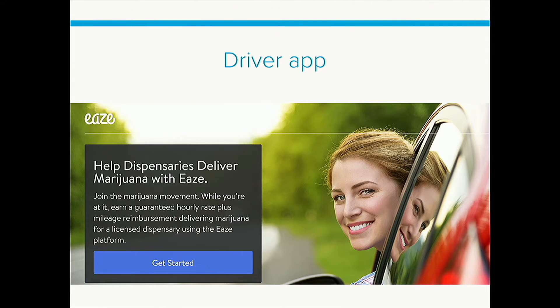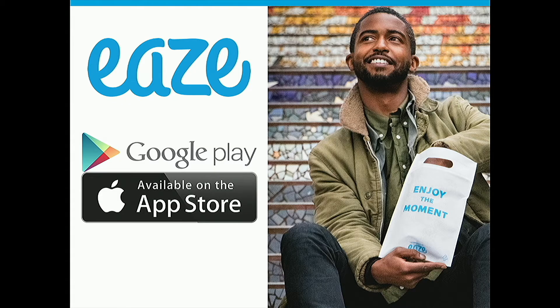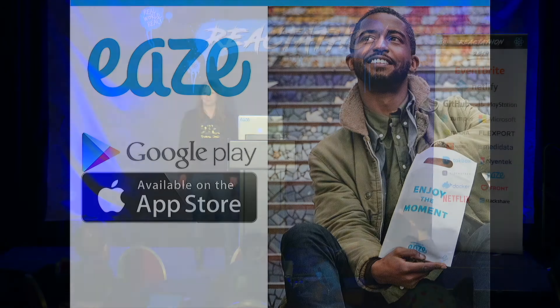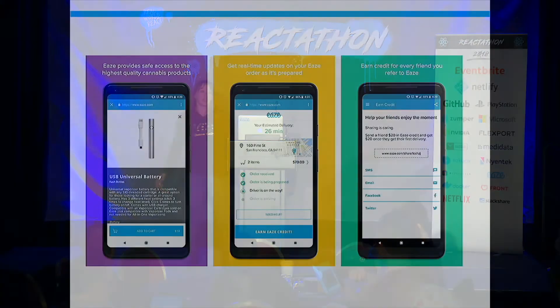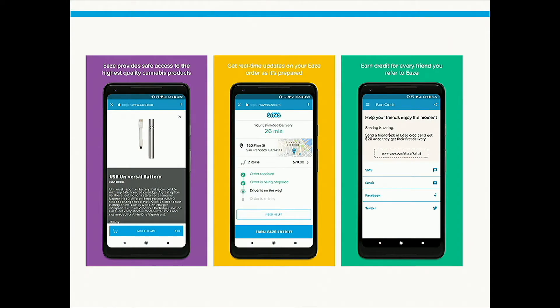Ease has two apps. One is the driver app, which the drivers use to facilitate deliveries. We also really wanted an app that consumers can download from the app stores. What do you think the number one thing is that an Ease user wants to do with their app? Buy marijuana. What's one thing we're not allowed to do according to app store policies? Sell marijuana. But we still think there's a huge value add in having a native app — enhanced signup, a referral center, ETA tracking, push notifications, and general discoverability.